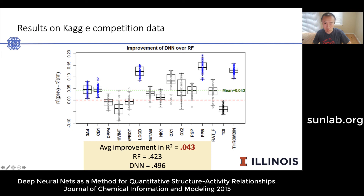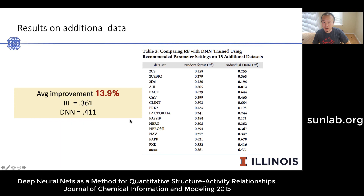The chart shows improvement on R-squared of the deep neural network (DNN) method against the random forest (RF) method. The red line at zero means anything below shows no improvement for DNN over random forest; above it indicates improvement. The blue dotted line is the mean average improvement across all 15 tasks — an average improvement of 0.043 in R-squared. Four of the 15 tasks show no improvement, but overall there is improvement. On the additional 15 datasets, the average improvement is even more significant at 13.9 percent.